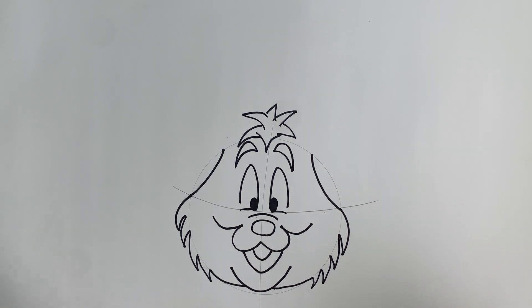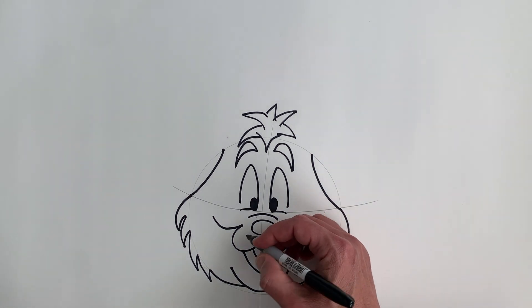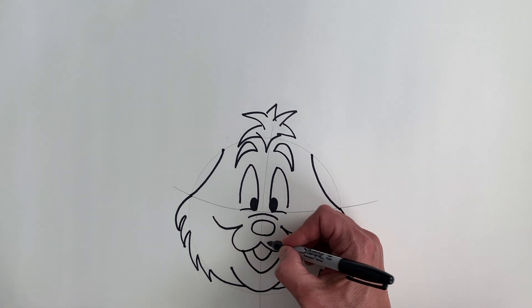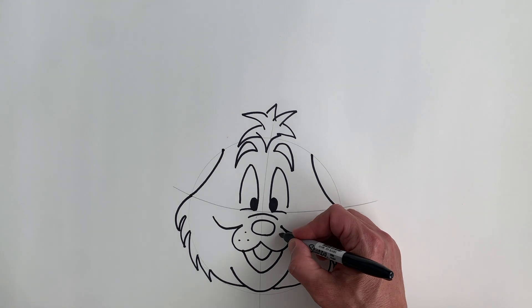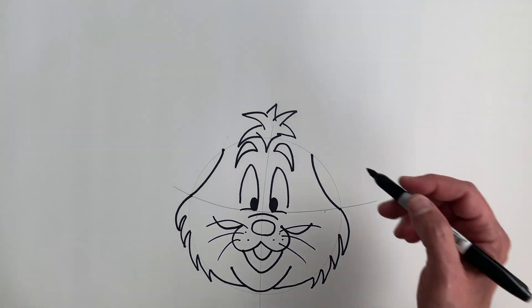All right, so now, what we could do is, we could give them some whiskers. So put three little dots here, and three little dots here. And then, as big or small as you want, one, two, three, one, two, three. Okay.